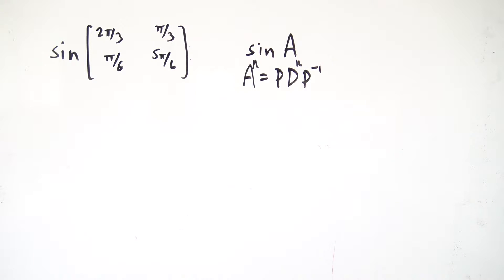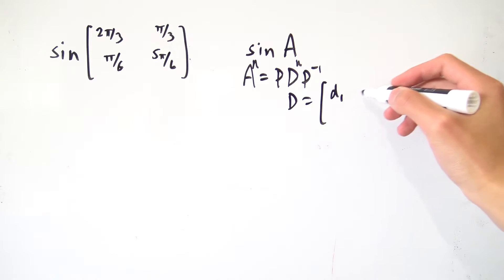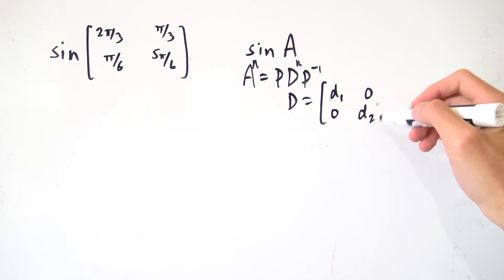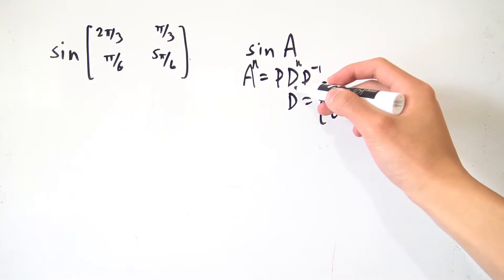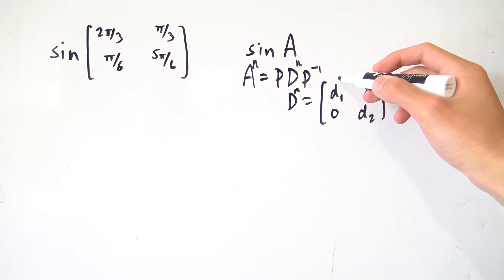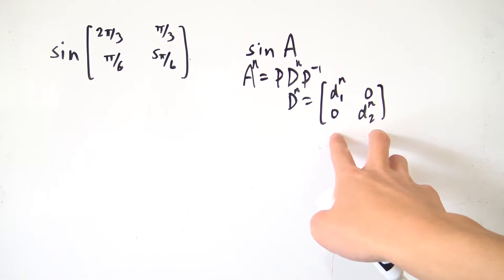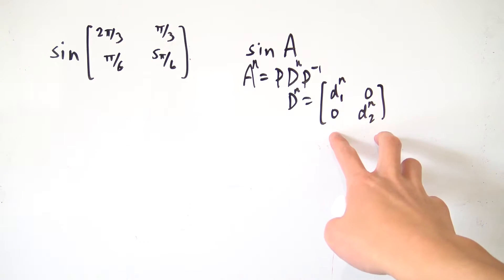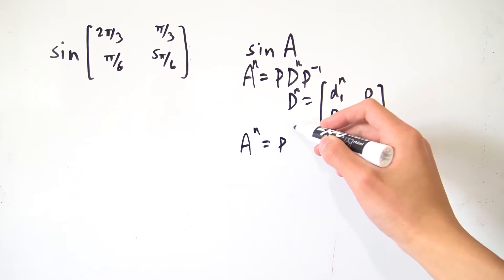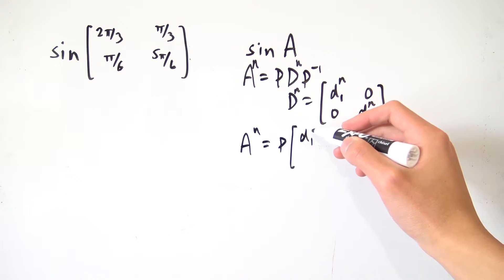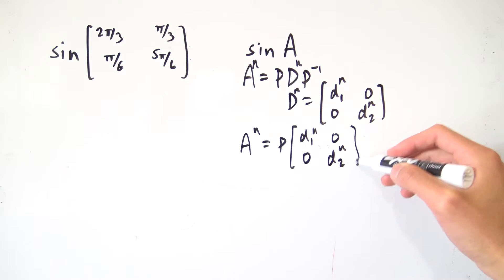Let's define D as a two-by-two matrix with entries d₁, 0, 0, and d₂. If we have our matrix D raised to some power n, what we actually do is raise these entries to the nth power as well — you can prove this easily using matrix multiplication. Substituting this in, we have A to the n equal to P times the diagonal matrix with d₁ to the n, 0, 0, d₂ to the n, times P⁻¹.